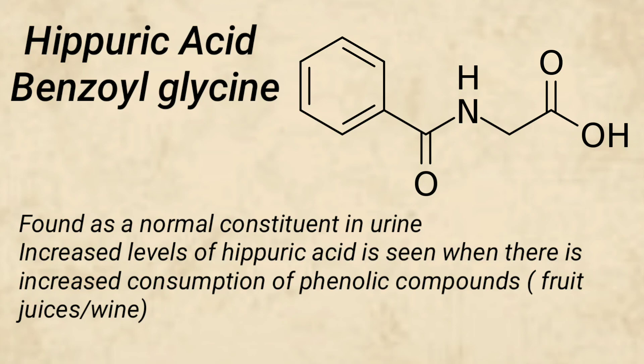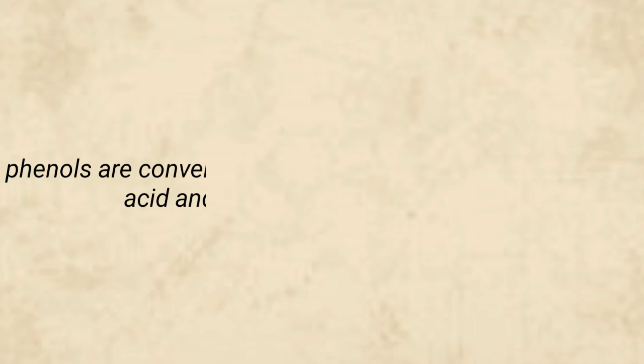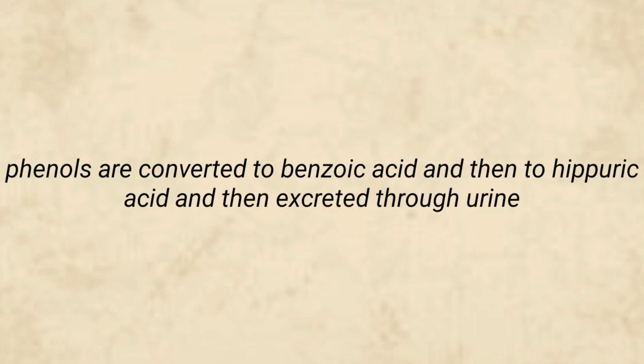Hippuric Acid is an acylglycine which is found as a normal constituent in urine. Increased levels of Hippuric Acid are seen when there is increased consumption of phenolic compounds like fruit juices and wine. These phenolic compounds get oxidized to benzoic acid and then get converted to Hippuric Acid, and are excreted through urine.